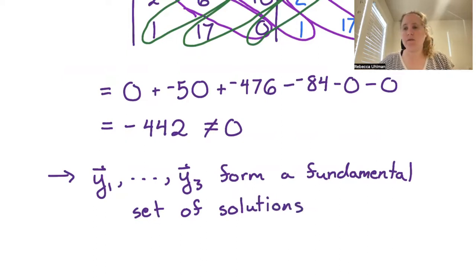If you're not told you are originally starting with solutions, then you would first need to verify that you actually have solutions and then check the Wronskian. In this case, we were told they were solutions, so we could skip that first step.